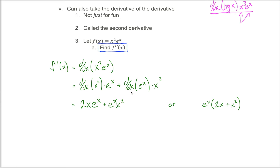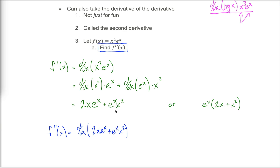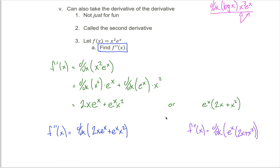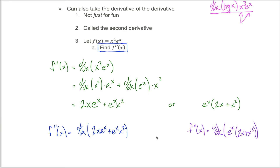To figure out the second derivative, all you have to do is take the derivative of the derivative. So f double prime of x would just be the derivative of 2x e to the x plus e to the x times x squared — the answer I got up here. And if that's not the answer you got, if the factored form is what you got, then your second derivative would be the derivative of e to the x times 2x plus x squared. I should get the same answer either way, but I'm going to do it both ways — maybe that'll give kind of a plug for why it makes sense to simplify sometimes.